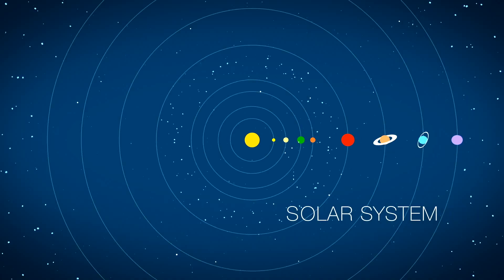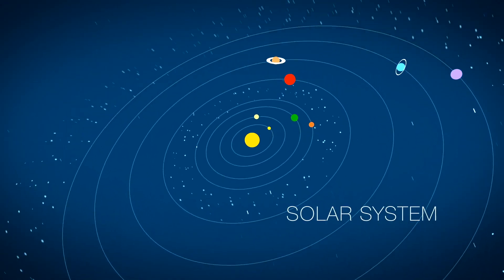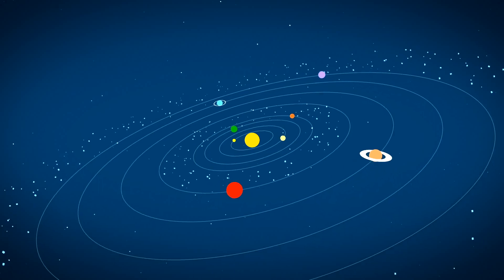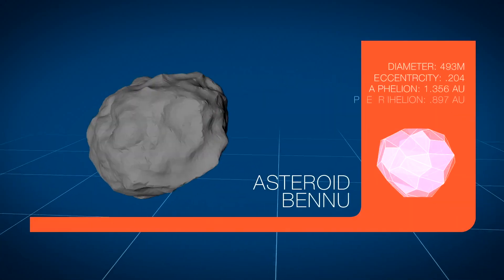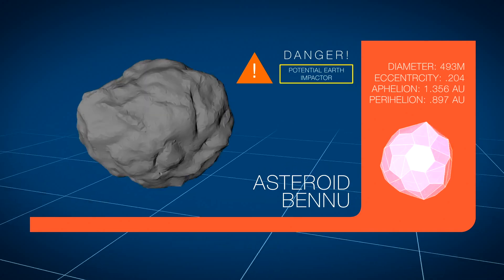From a distance, everything in our solar system appears to be in its place. However, if you take a closer look, sometimes you can find asteroids like Bennu leaving their home in the inner asteroid belt and passing very close to Earth.